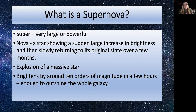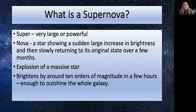A supernova is the explosion of a huge, massive star. It happens when nuclear fusion in the core can no longer hold up the star against gravity. They emit energy equal to that released over the whole lifetime of the star — so when a star sits on the main sequence it emits energy slowly, but in a supernova you have all of that energy at once. It brightens by about 10 orders of magnitude in a few hours, and this can outshine the entire galaxy it's in.